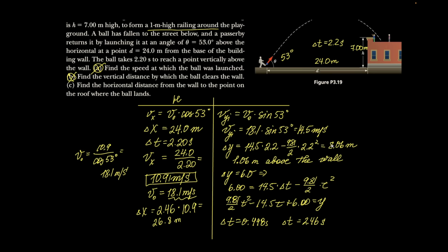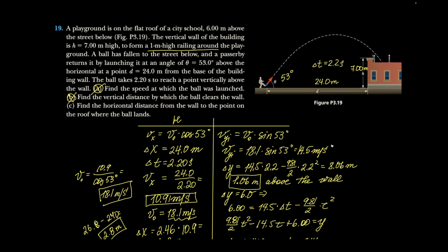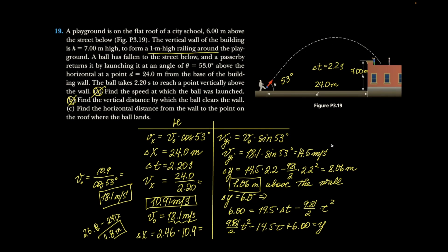So, then, if I subtract 24 from it, 2.8, it's going to clear the wall by 106 meters, and it's going to land 2.8 meters from the wall on the playground. These are the answers to question number 19, which was rather a doozy. I'm glad it's done. Hope it helps. Thank you.